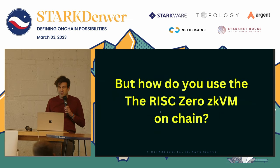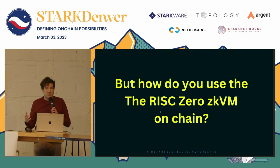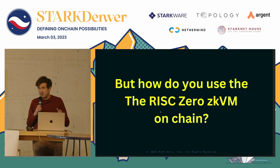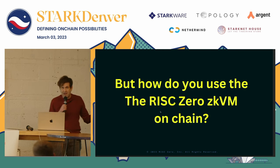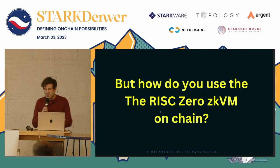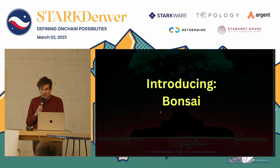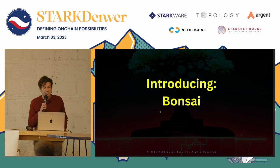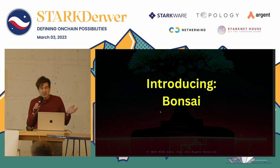The question remains: how do you actually use this on-chain? How do you get that proof of computation onto the blockchain so that you can use it for your application, whether it's gaming, DeFi, or something else? In that regard, we are introducing Bonsai, which is a multi-chain, cross-chain roll-up mechanism by which we take these zero-knowledge proofs generated using our ZKVM and get those onto various chains.